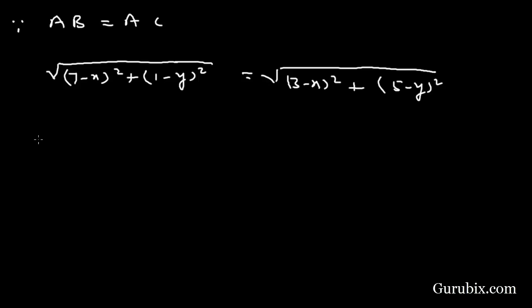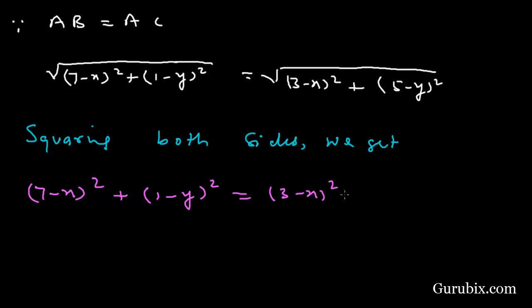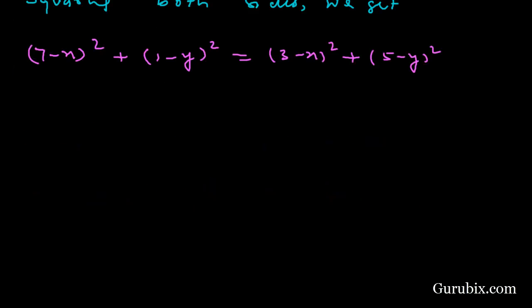Now we shall square both sides. Squaring both sides, we get (7 - x)² + (1 - y)² equals (3 - x)² + (5 - y)². Now we shall expand these squares.